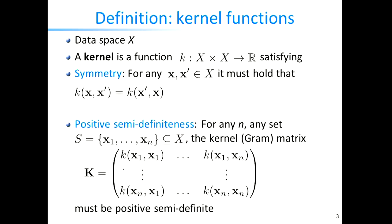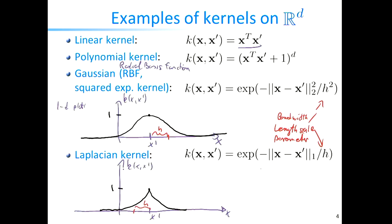We've reviewed what kernel functions are and their basic properties: they must act as inner products in some transformed space, so they must be symmetric and positive definite. We discussed these properties at length, and last lecture we also talked about a bunch of examples of kernels, which we'll be discussing again today.